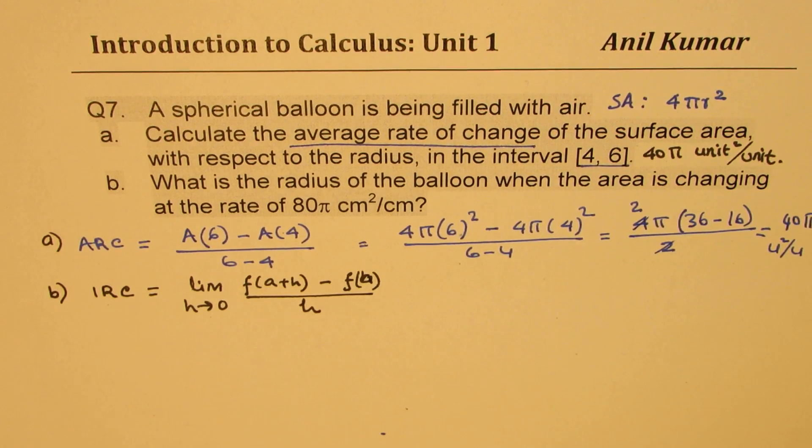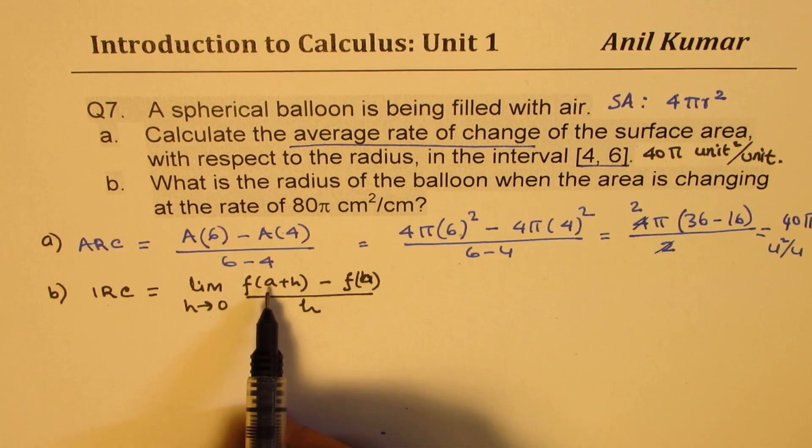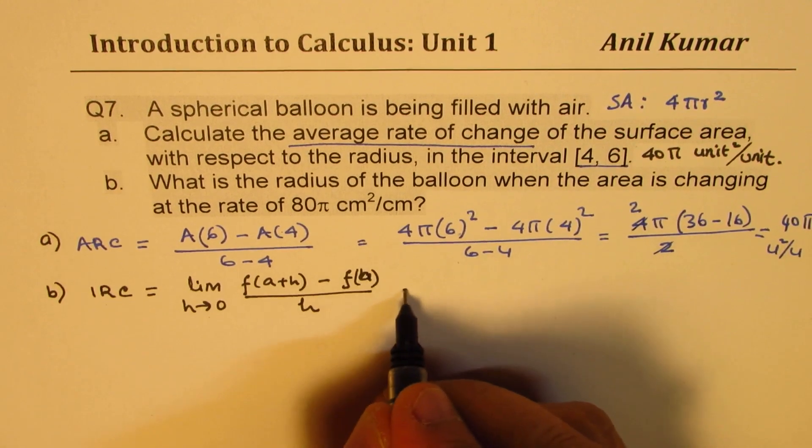Now in our case we are given the instantaneous rate of change, we need to find the value of a. That is the equation we need to find what a is. So let's try to figure this out.